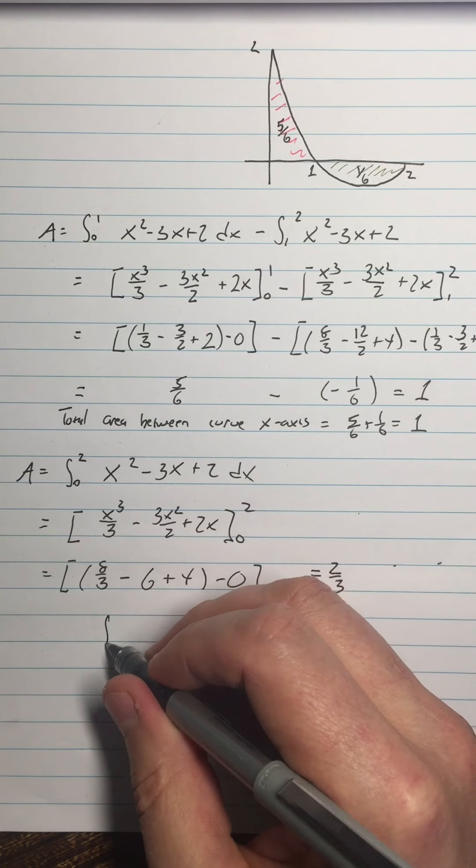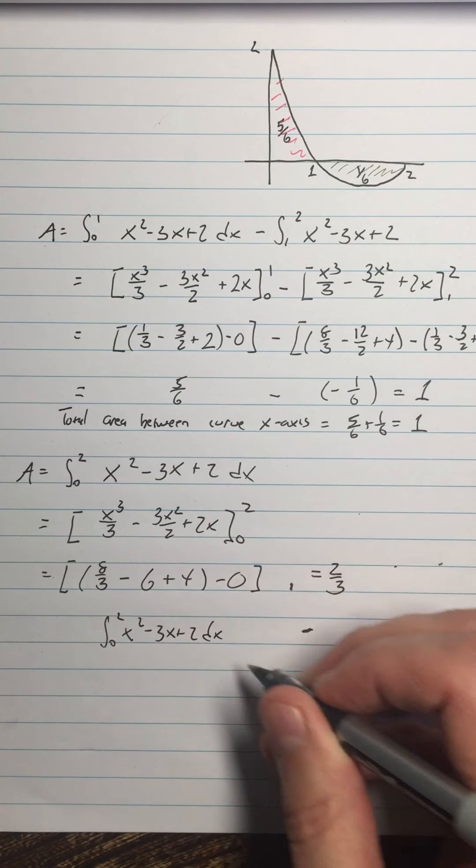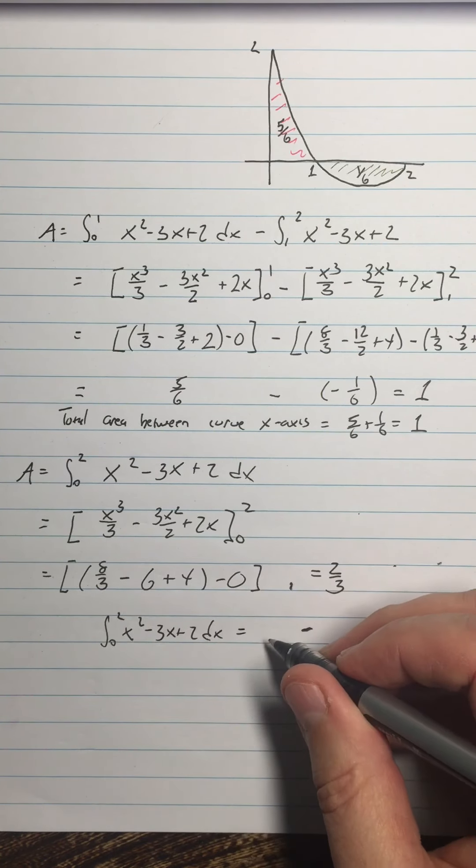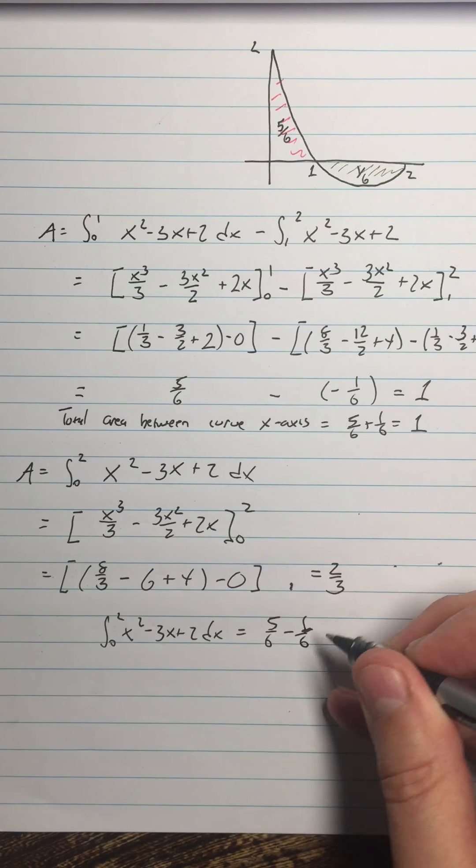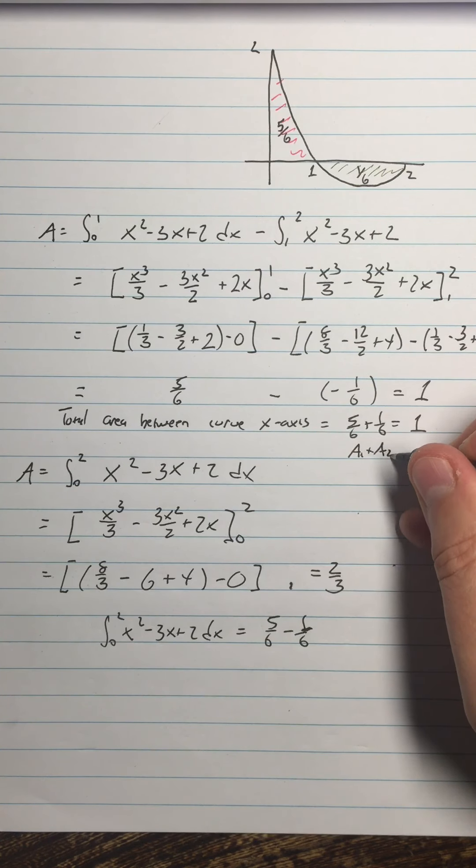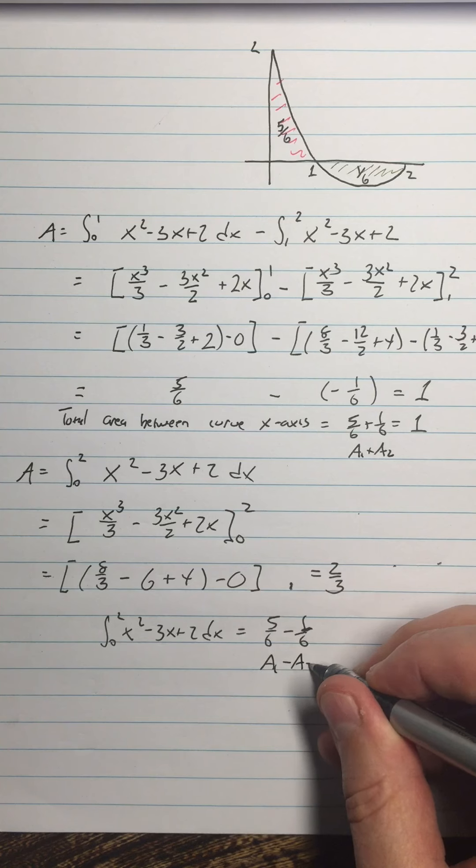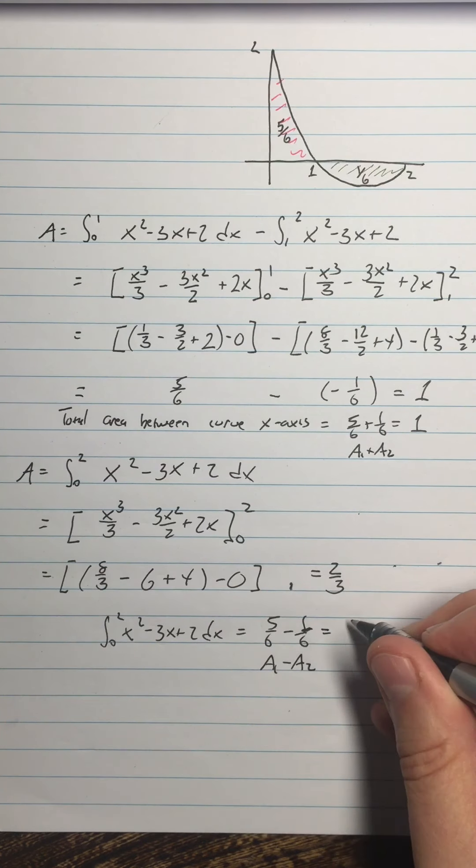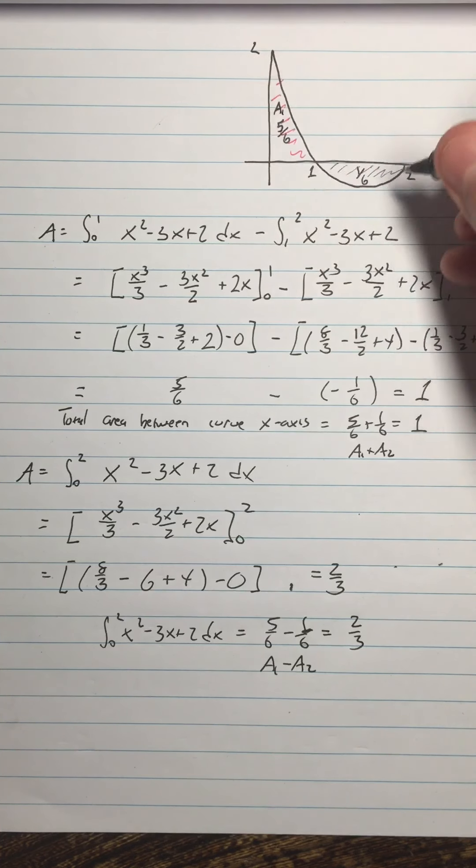Which is, that integral from 0 to 2 of x squared minus 3x plus 2 dx is equal to 5 sixths minus 1 sixths. So you can think of this as like a1 plus a2. That's the total area, and this one is a1 minus a2. So this equals 2 thirds. So if we call this a1 and this a2.